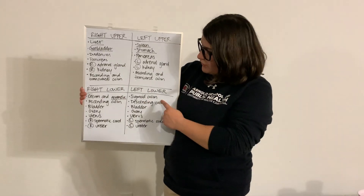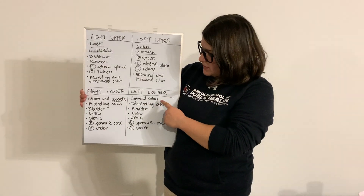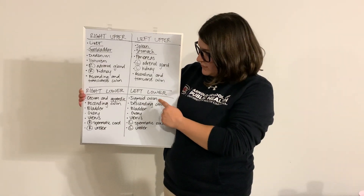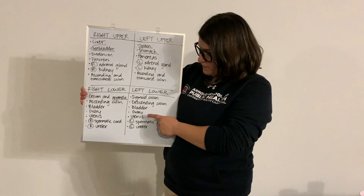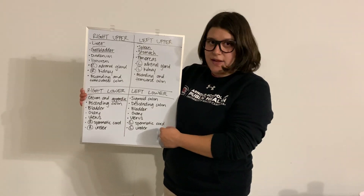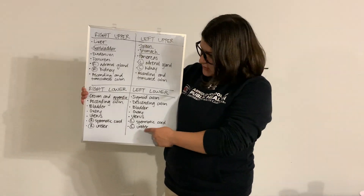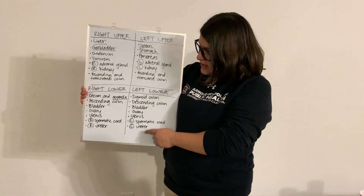And in the left lower quadrant we're going to have the sigmoid colon, descending colon, bladder, ovary, uterus, left spermatic cord, as well as the left ureter.